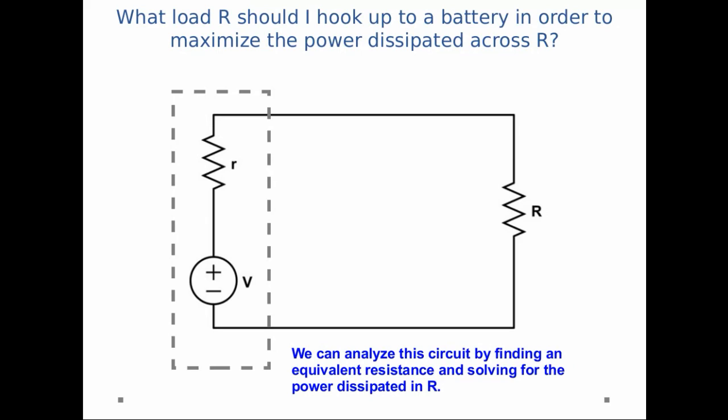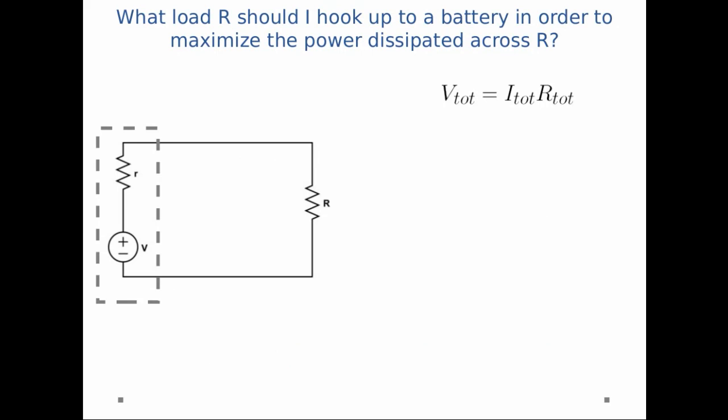So we can analyze this circuit by finding an equivalent resistance and solving for the power dissipated in capital R. So I know that the total V is equal to the total I times the total R, that's just Ohm's law. Well the total voltage is just V, the voltage across the battery.